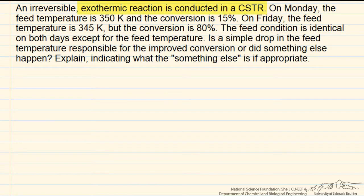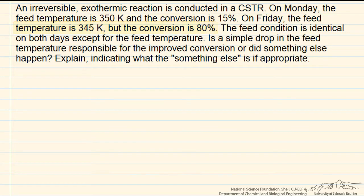This problem deals with an exothermic reaction conducted in a CSTR. It's observed that on Monday the feed temperature is 350 Kelvin, but the conversion is 15%. On Friday the feed temperature is 345 Kelvin, but the conversion is now 80%. The feed conditions are identical on the two days except for that temperature. The question is: can that drop in temperature actually lead to an improved conversion, or did something else have to happen?